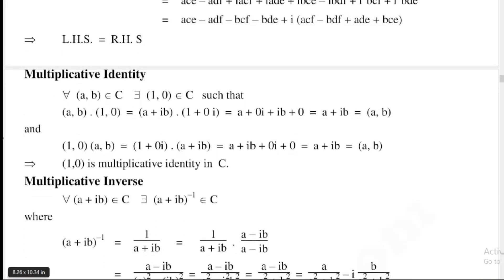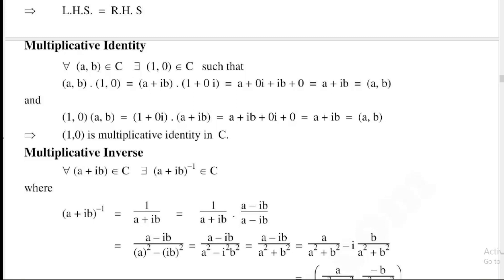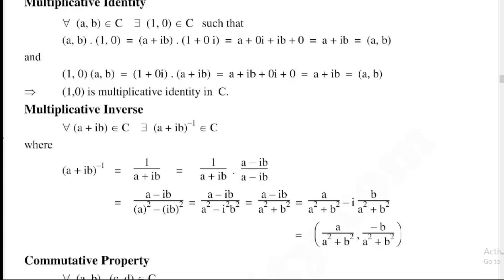Next: Multiplicative inverse. For all (a + ib) belonging to the complex numbers, (a + ib)⁻¹ = 1/(a + ib). Rationalizing by multiplying by (a − ib)/(a − ib), we get (a − ib)/[(a + ib)(a − ib)] = (a − ib)/(a² − i²b²). Since i² = −1, the denominator becomes a² + b². Therefore the inverse is a/(a² + b²) − i·b/(a² + b²), written as (a/(a² + b²), −b/(a² + b²)).